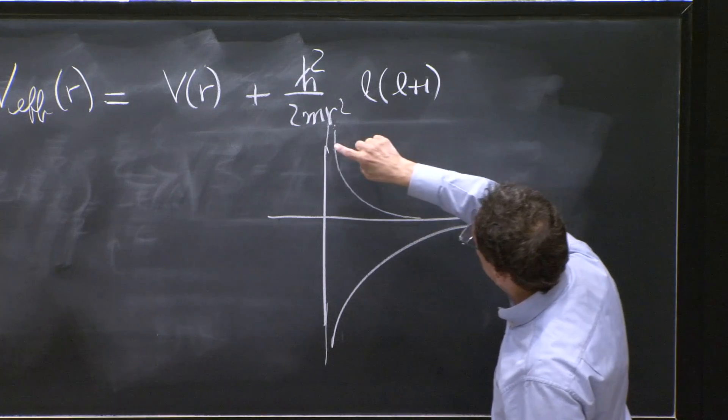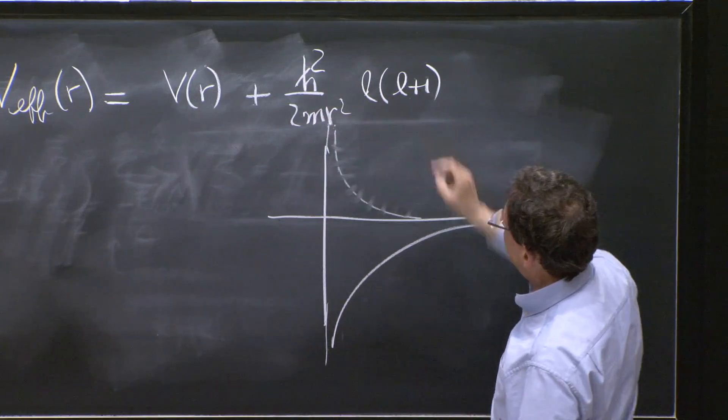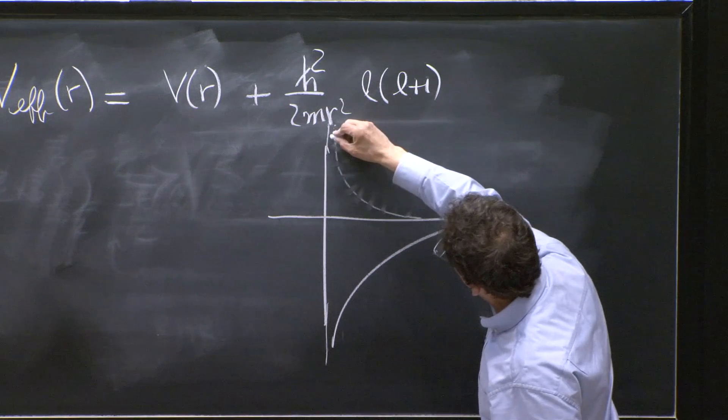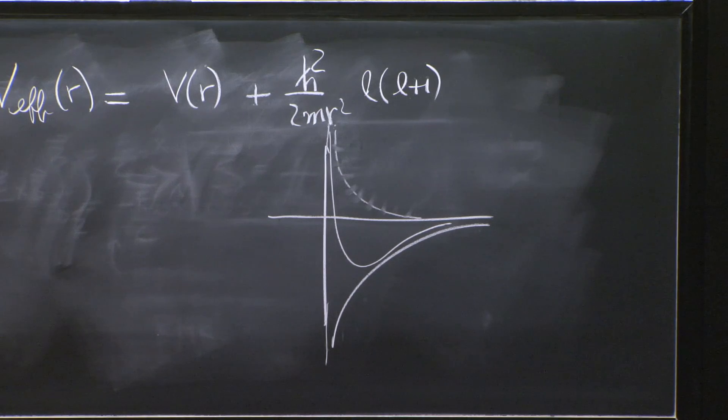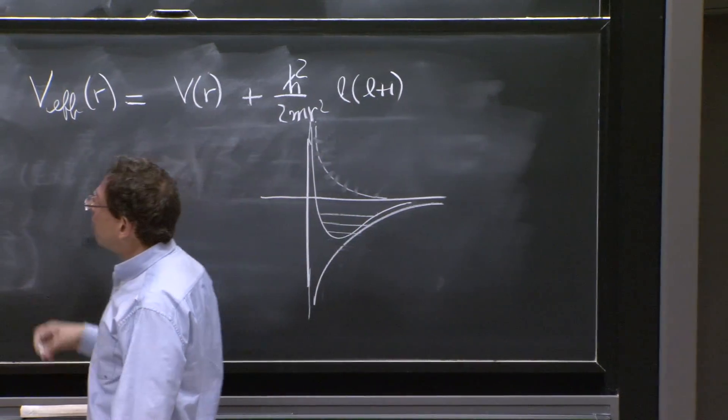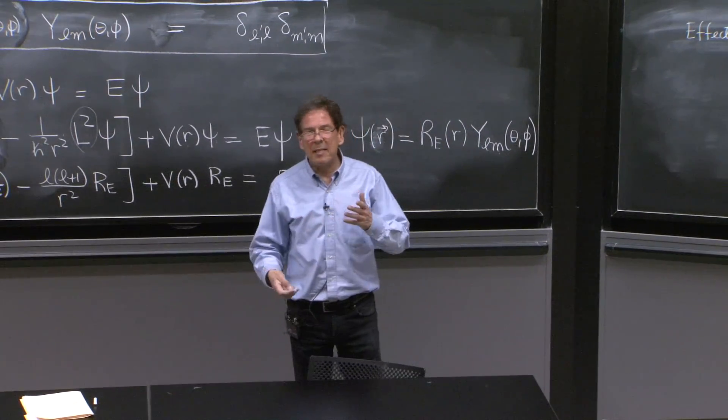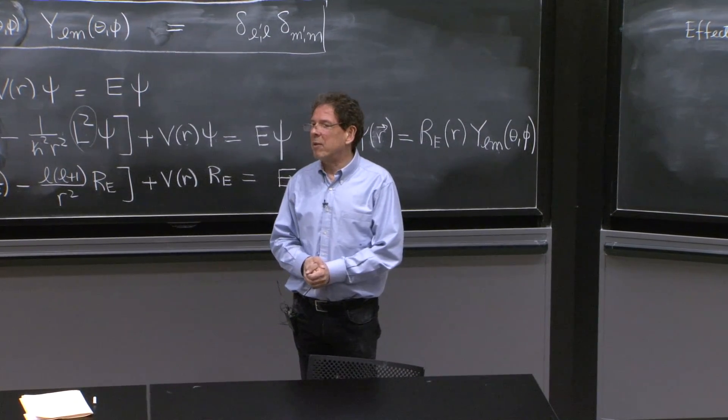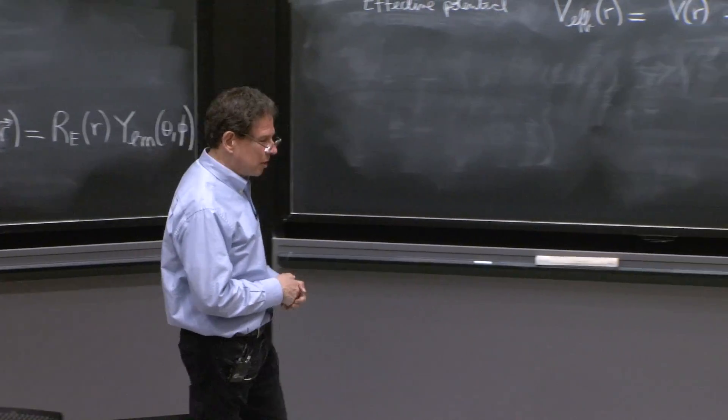So when you combine the two, this is just the centrifugal barrier. But you combine the two, this diverges faster as well. So the total potential is something like that in between. And then you can have bound states. And all the theorems we've learned about bound states and eigenstates of one-dimensional potential, now you discover that they're very useful in three dimensions. Many things just carry through.